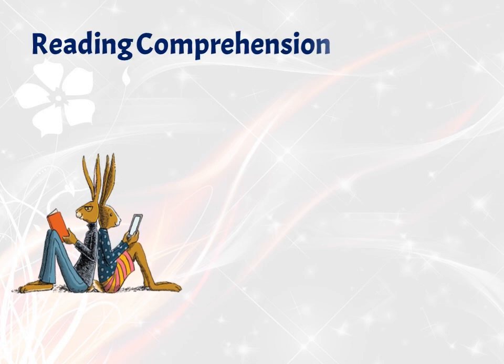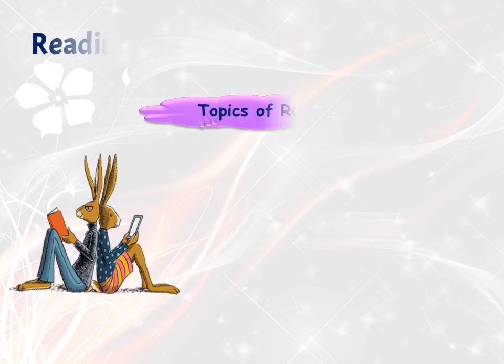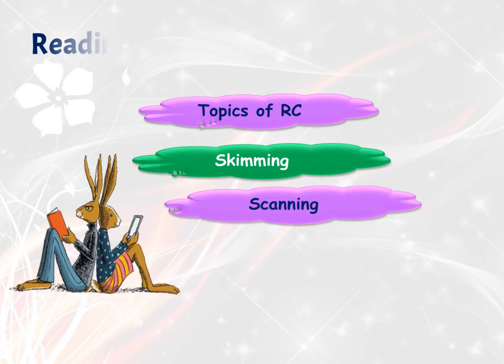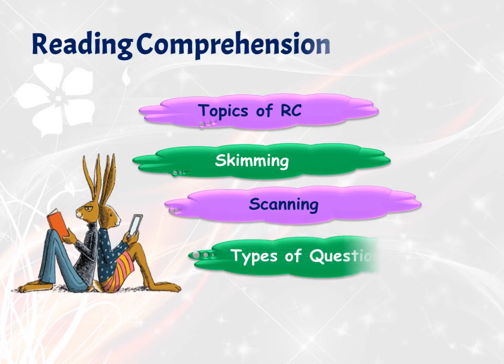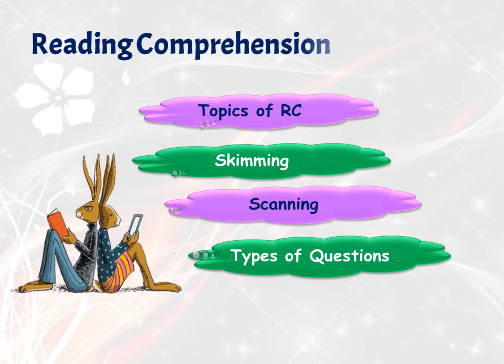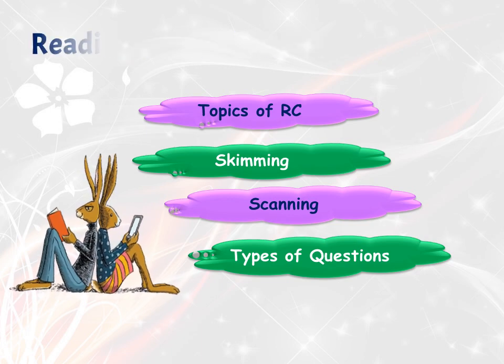Now let us see the most important and essential part of verbal ability for any competitive exam — reading comprehension. To answer reading comprehension, you should know the areas being tested, speed reading techniques like skimming and scanning, and the types of questions asked. This section will fetch you nearly 5 to 15 marks depending on your competitive exam.